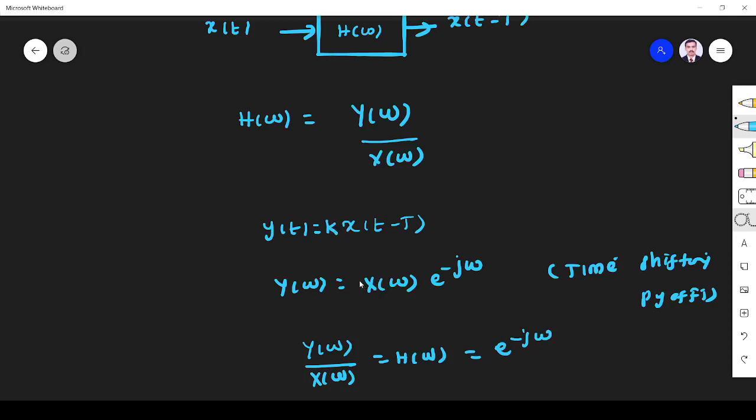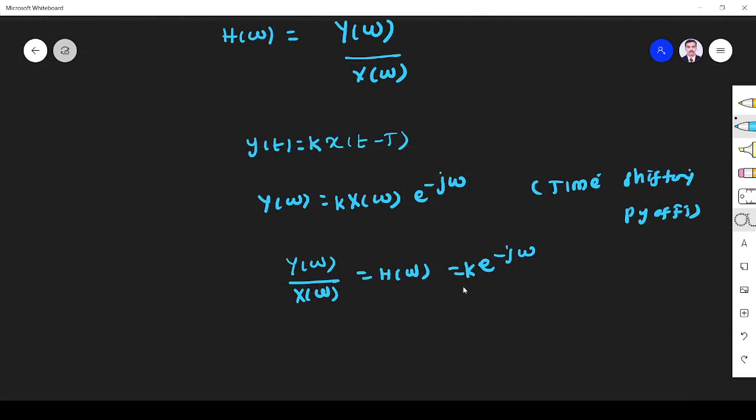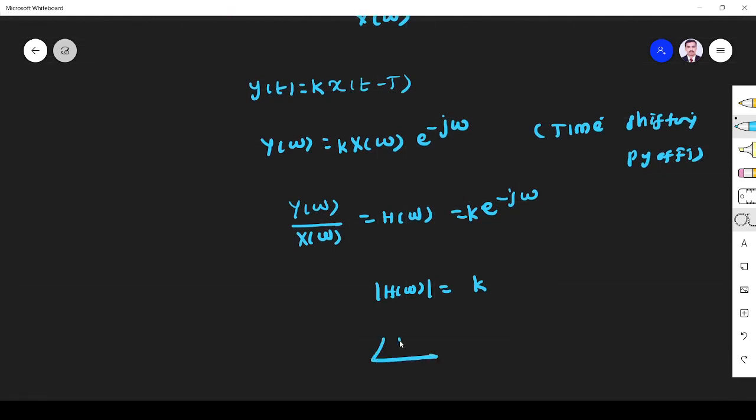We can add K also—if you take K, it is K times e^(-jωT). K may be a greater or lesser number because of distortion. Now take the magnitude: |H(ω)| = K because |e^(jωT)| = 1. What about phase? The phase of H(ω) is -ωT.